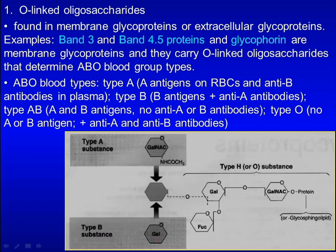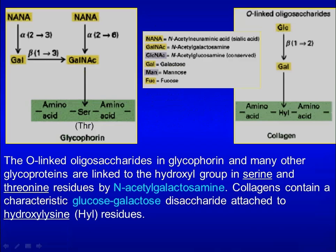Therefore, people with type A blood have A antigens on the surface of red blood cells and anti-B antibodies in plasma. People with type B blood have B antigens on red blood cells and anti-A antibodies in plasma. People with type AB blood have both A and B antigens on red blood cells but neither anti-A nor anti-B antibodies in plasma. People with type O blood have no A or B antigens on red blood cells but have both anti-A and anti-B antibodies in plasma. The O-linked oligosaccharides in glycophorin and many other glycoproteins are linked to the hydroxyl group of serine or threonine residues by N-acetylgalactosamine.